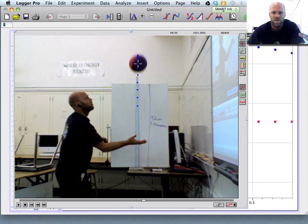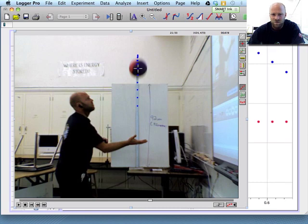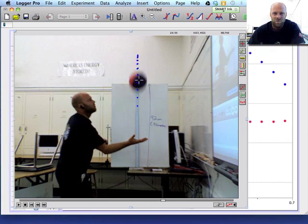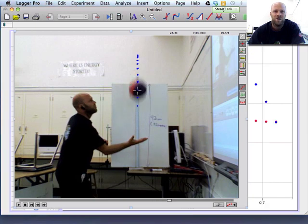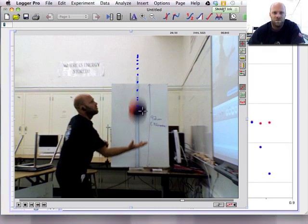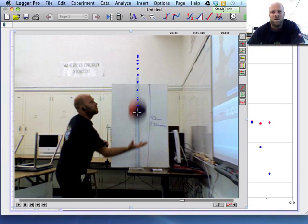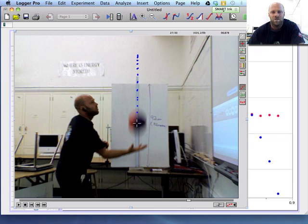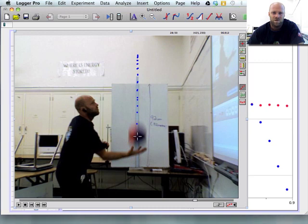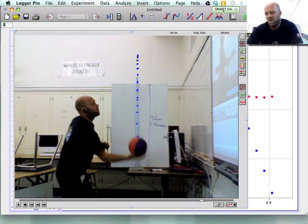Ball is now moving downward. And I'm just clicking where I think the center of the ball is. And each time I click, the ball moves down. That's a little hard to tell, but I'm guessing. Okay, it's definitely the ball is in my hand now, so I'm not going to click anywhere.